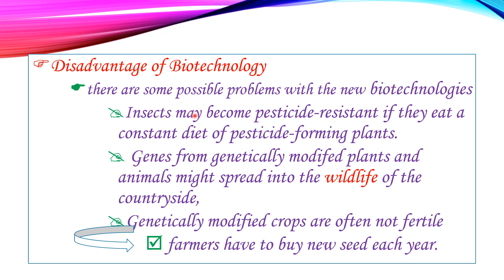There are some possible problems or disadvantages within new biotechnology. Insects may become pesticide resistant if they eat a constant diet of pesticide from genetically modified plants.